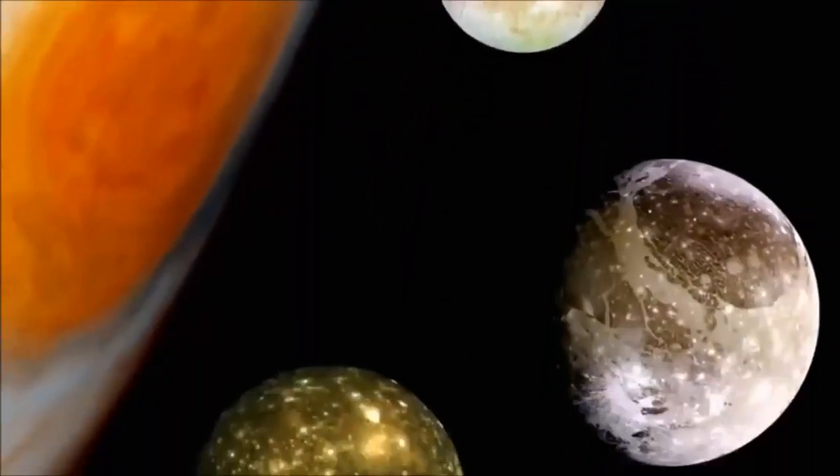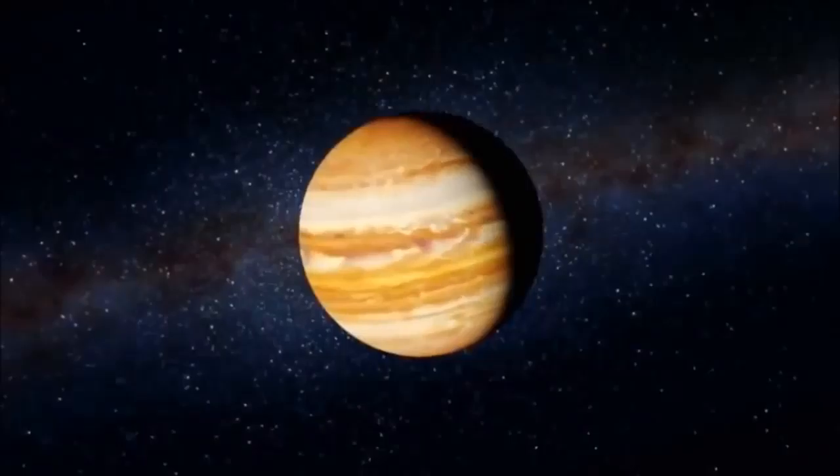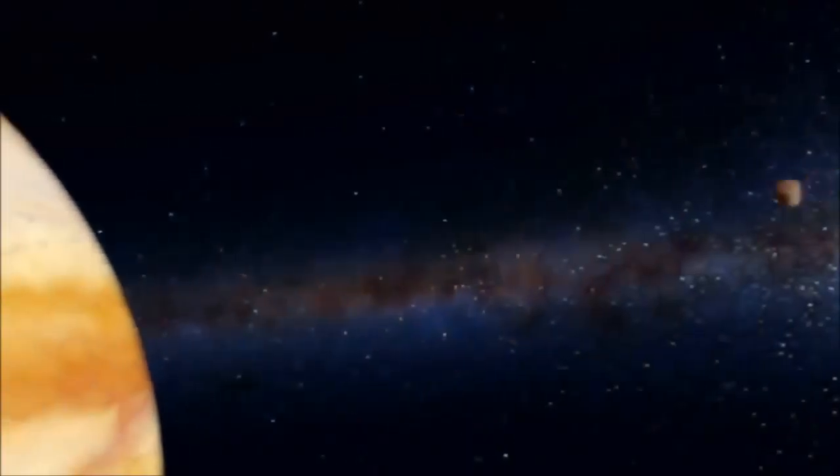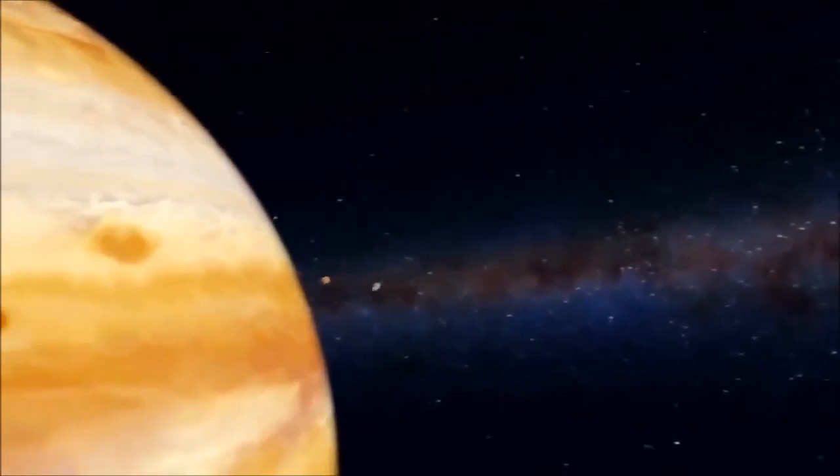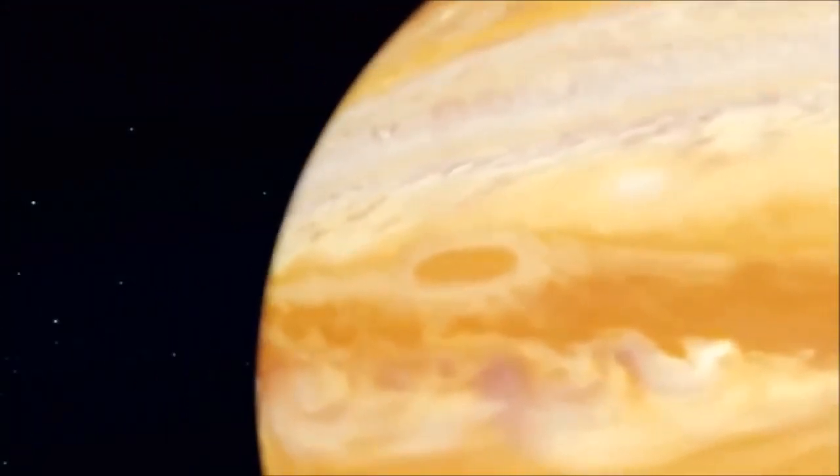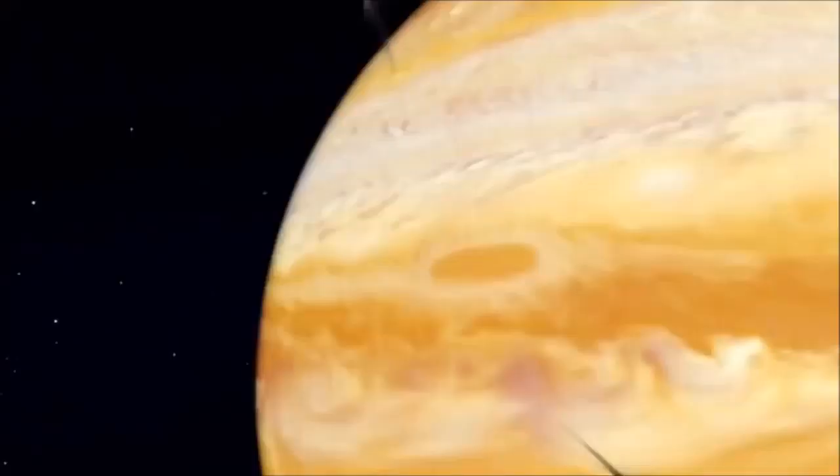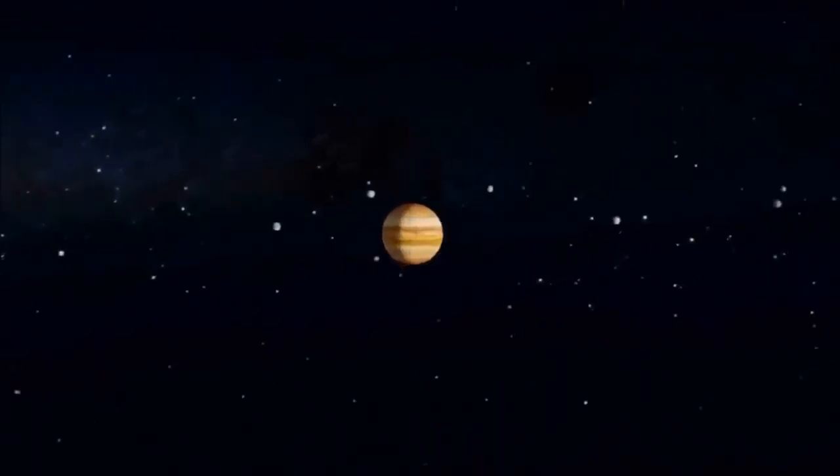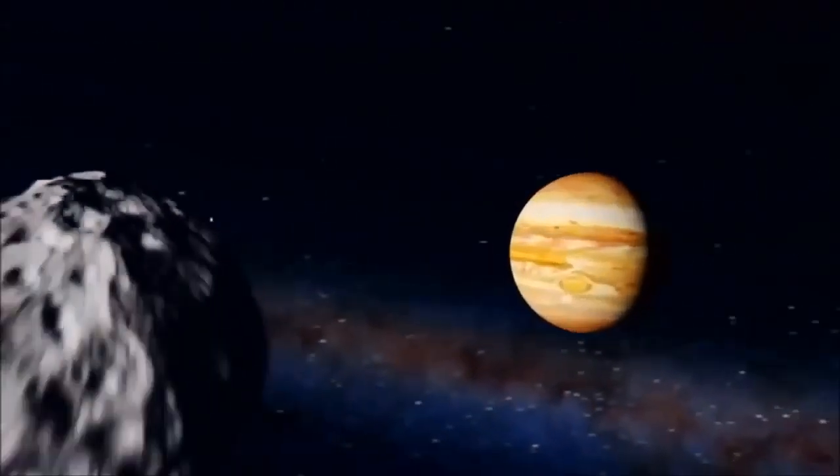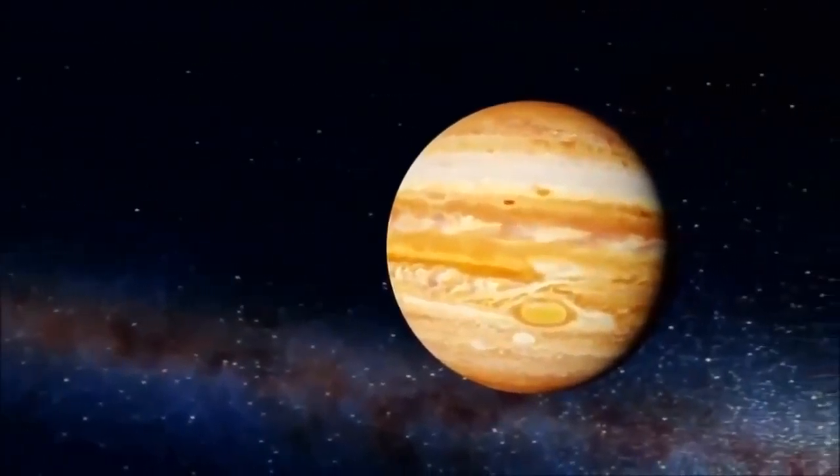As Jupiter coalesced, its massive gravity began adding to its menagerie, little remaining bits from the birth of the early solar system. The giant planets formed early in a gas-rich environment when there was lots of little flotsam and jetsam around the solar system still to be captured into orbit.